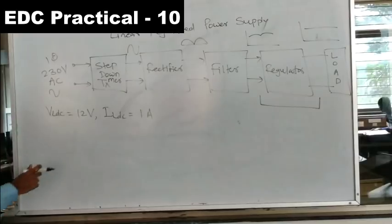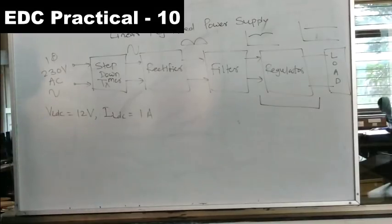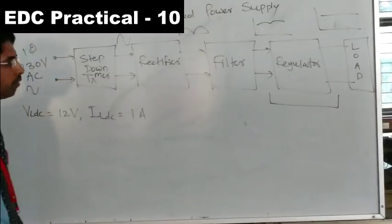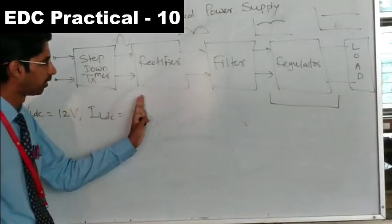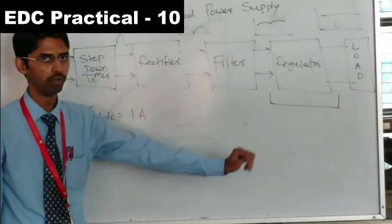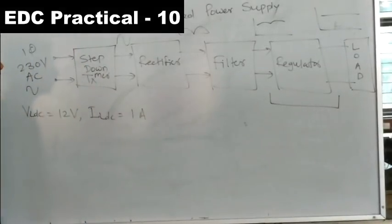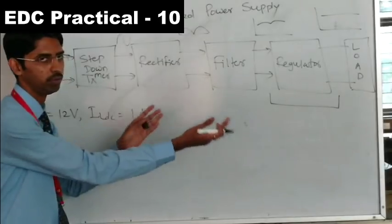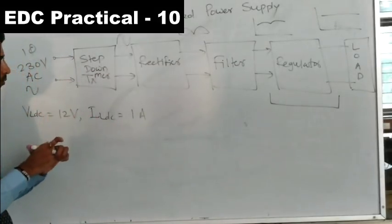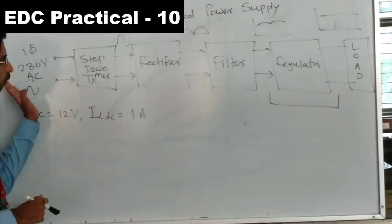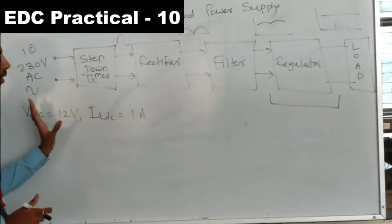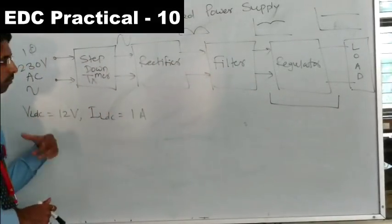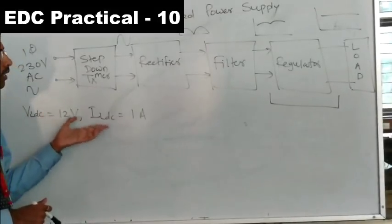To design 12 volt, 1 ampere regulated output, we need to select appropriate ratings for the transformer, rectifiers, filters, and load. The design is done from output to input, and we must know the different voltage drops that take place in each block as the signal flows through transformer, rectifier, filter, and regulator.